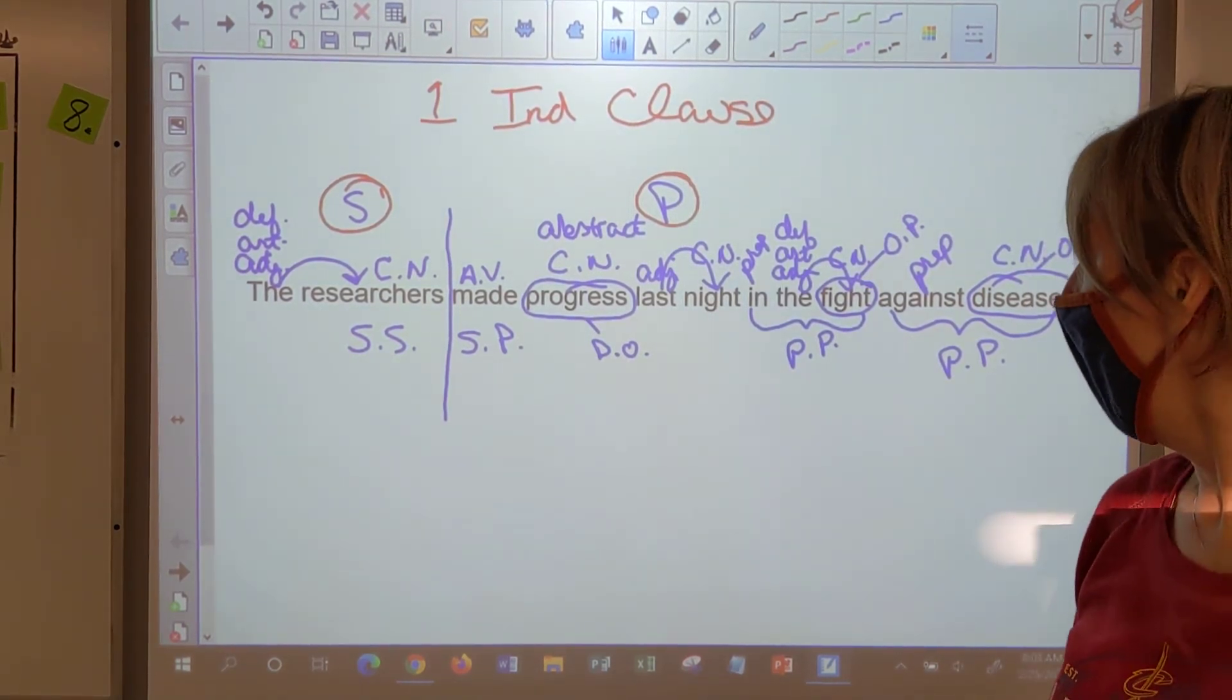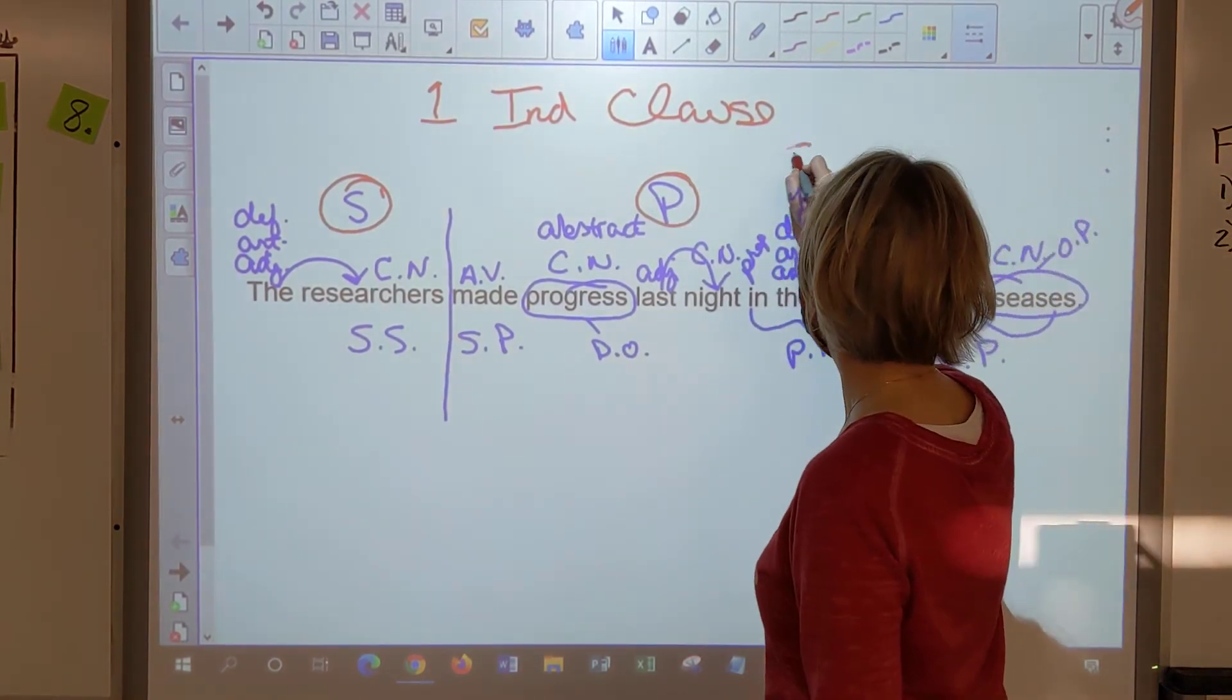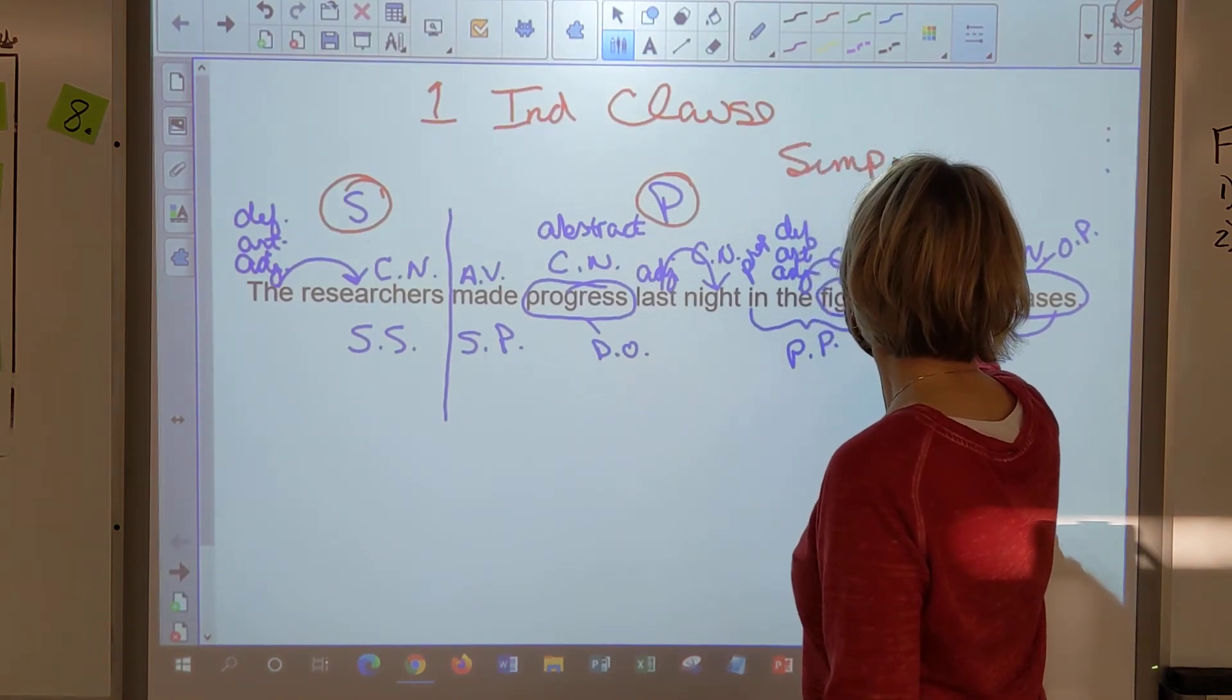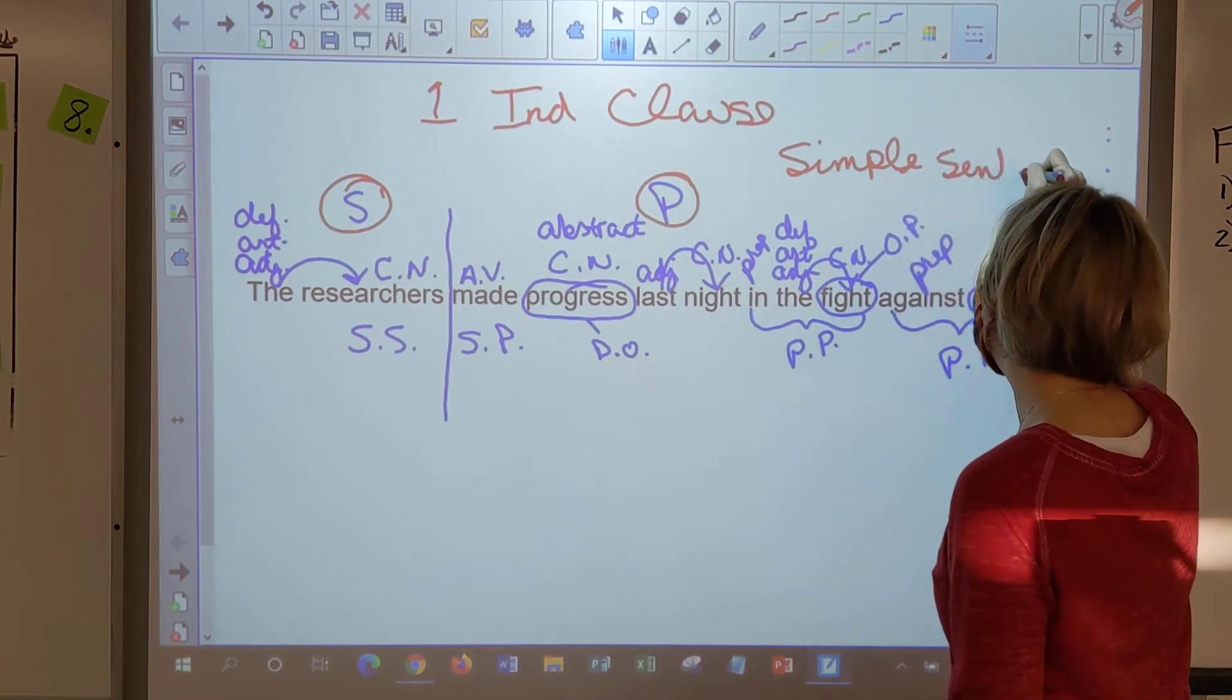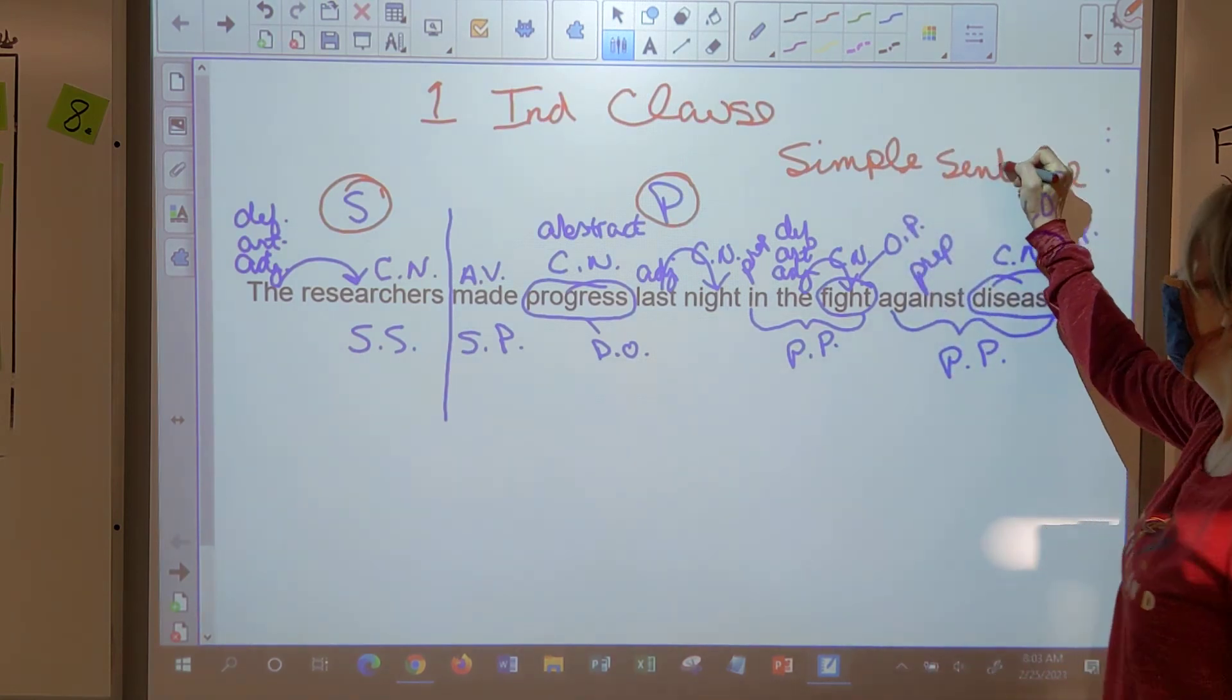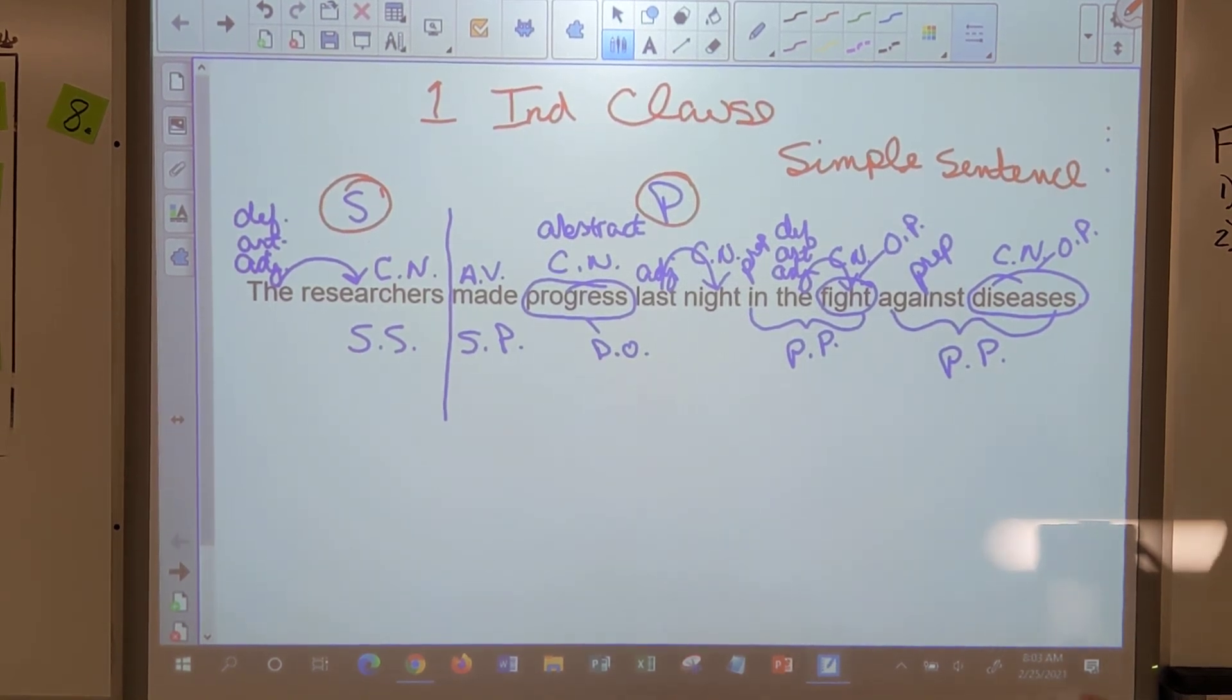Mia. Simple sentence. It is a simple sentence. Why? Because it's made of one clause. It's a simple sentence because it is one independent clause. Emory. The sentence is declarative. It is declarative.